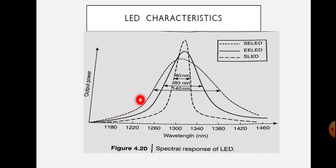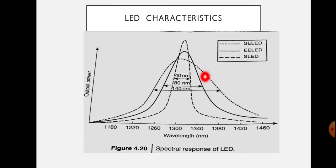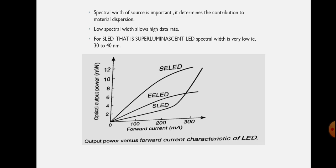The surface emitting LED has a larger bandwidth of 140 nm and its output power is lesser compared to the S-LED and EE-LED. The EE-LED has an output power average between that of the SE-LED and S-LED, and its bandwidth is approximately 80 nm. The spectral width of the source is a very important factor as it determines the contribution to material dispersion — a lower spectral width means lower material dispersion, which allows higher data rates.